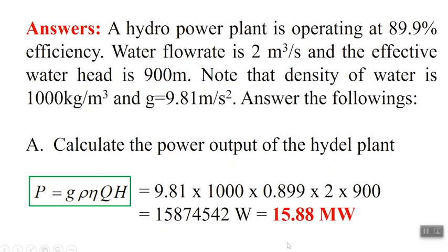To calculate the power, the equation you need is: P = g × rho × efficiency × Q × H. All the values are given here and you will end up with 15.88 megawatts. That is your power output.